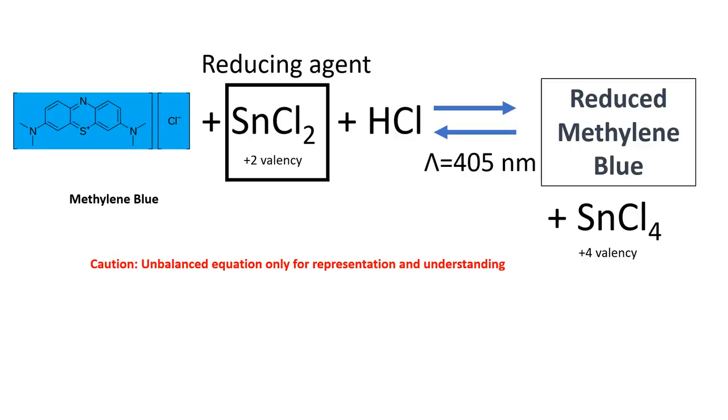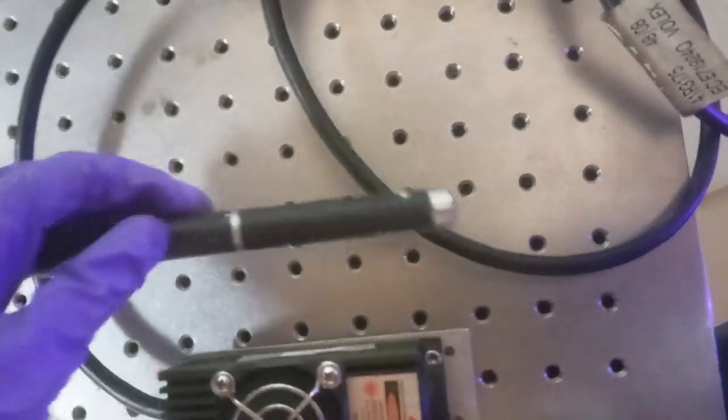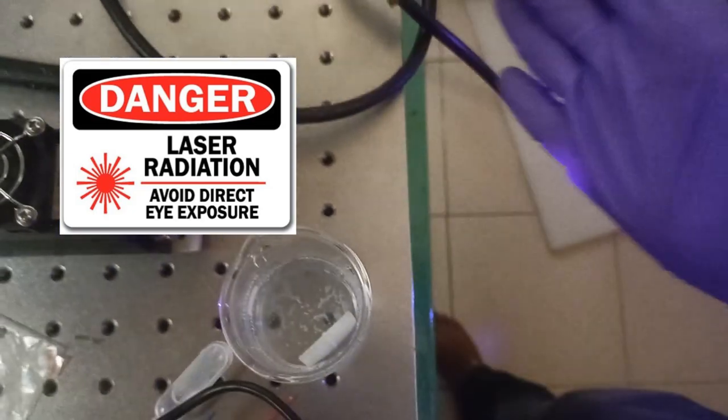This is one example of leucodyes. When you irradiate with light it is changing its color. You can also try using a 405 nanometer laser pointer. This is my 405 nanometer laser. Let's see what we do.